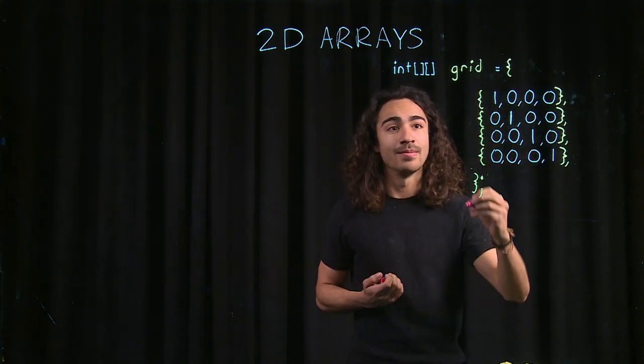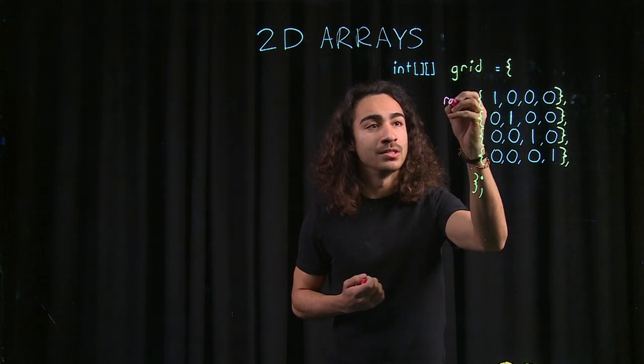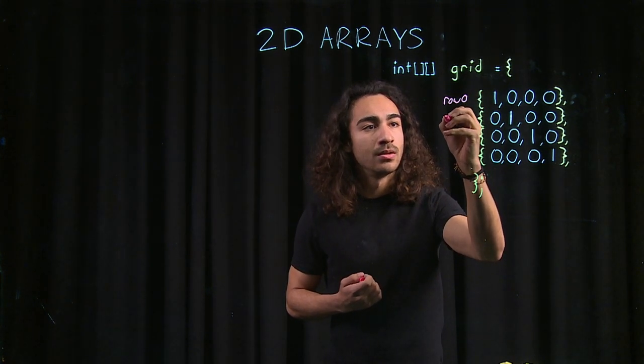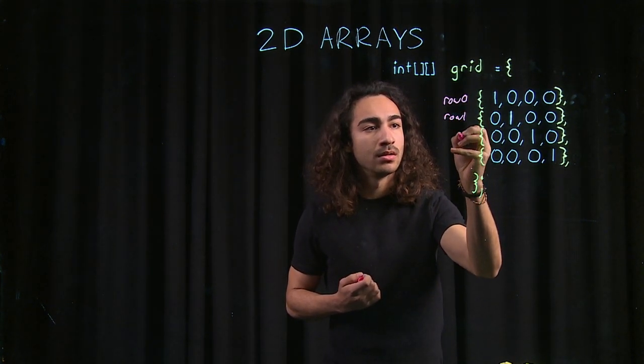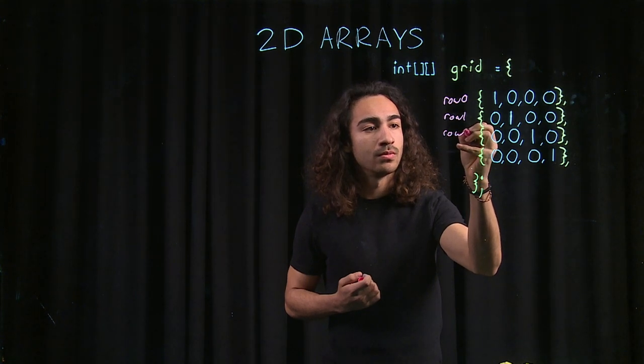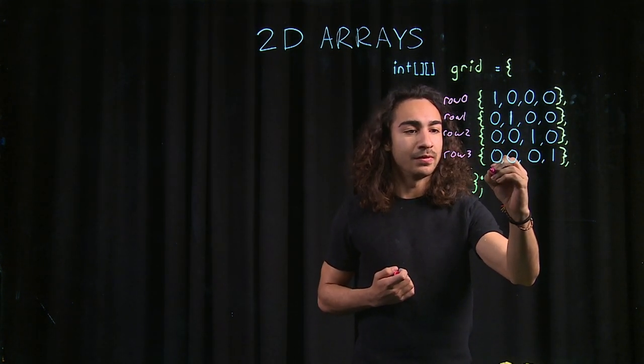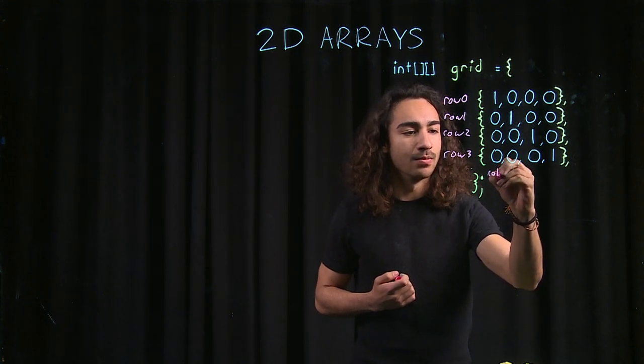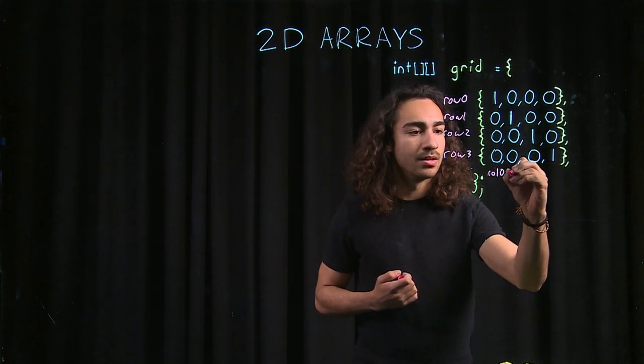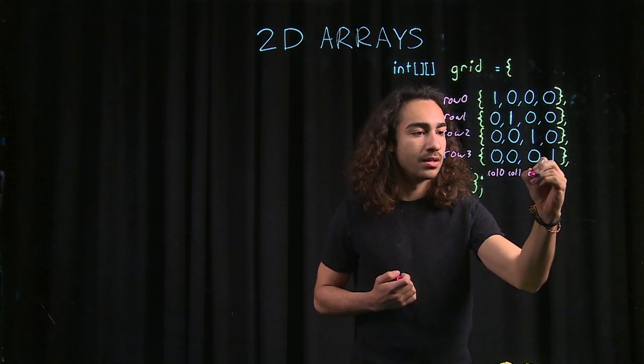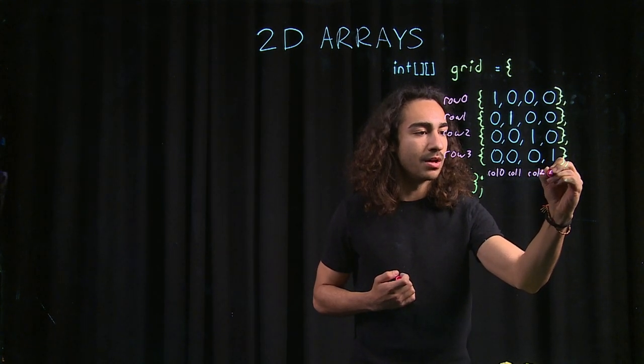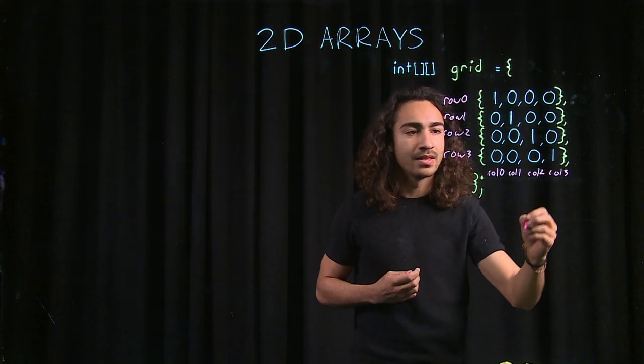So, let's start with row 0, row 1, row 2, and row 3. And then we also have our columns over here. So, we go column 0, column 1, column 2, and column 3.